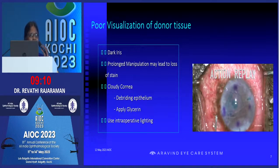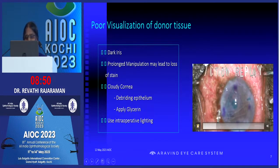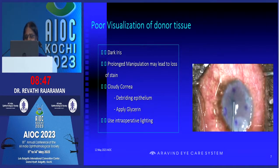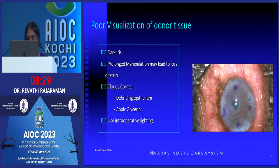Poor visualization — as Dr. Fogla just mentioned — is another challenge. Sometimes if the staining is not good or the cornea is too hazy, we will have a problem. In one such case, you can vaguely see a triangle of tissue. After injecting, the surgeon tried to unfurl it and it went behind the pupil. Even recognizing that is very difficult in such a cornea, especially if the staining is poor. We may need additional instruments like intraoperative or outsource light to find it.